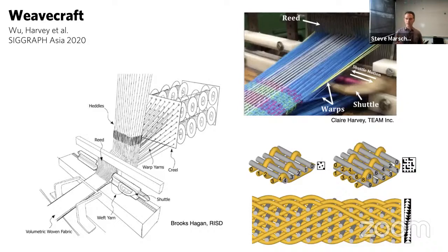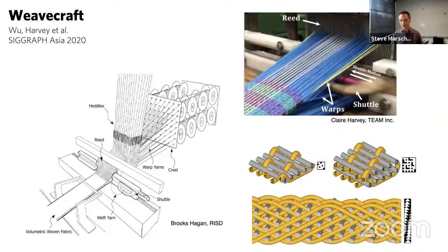3D weaving is typically used for composites — like carbon fiber polymer composites — where you embed fibers into a material to make it stronger. The big advantage is interlacing in all directions so the material can't fail by delamination. Typically this manufacturing involves making large chunks of homogeneous cloth once you've figured out the pattern. You design these patterns mostly by trial and error, scratching your head on graph paper. Because it's difficult to design new patterns, people typically just work with repeated patterns.